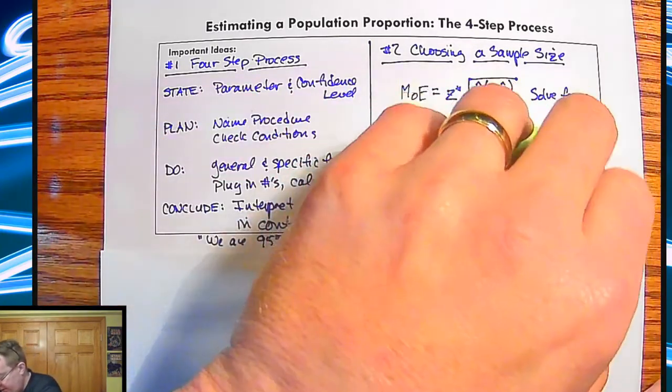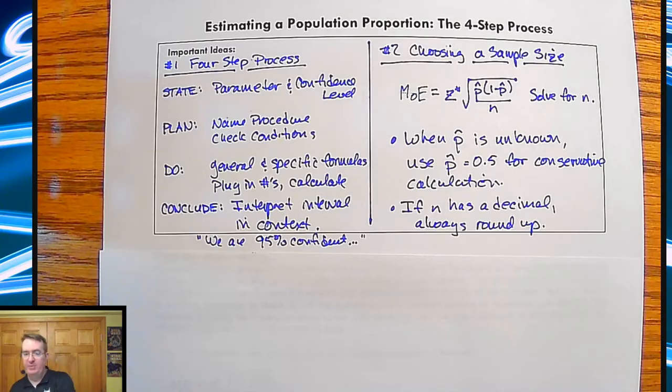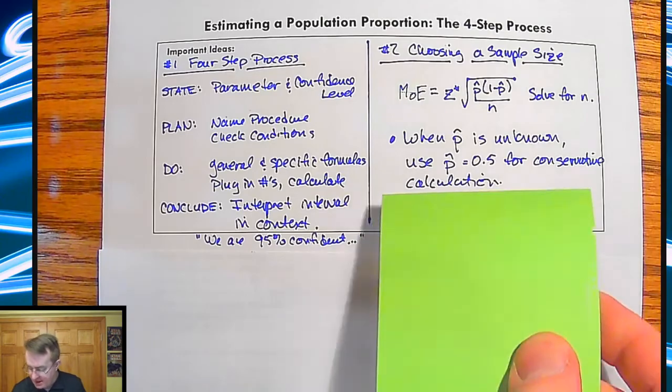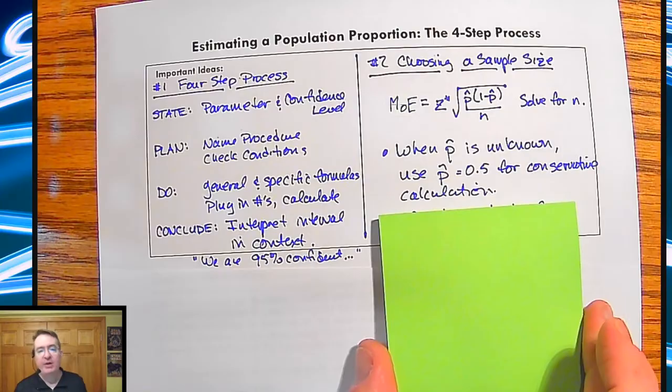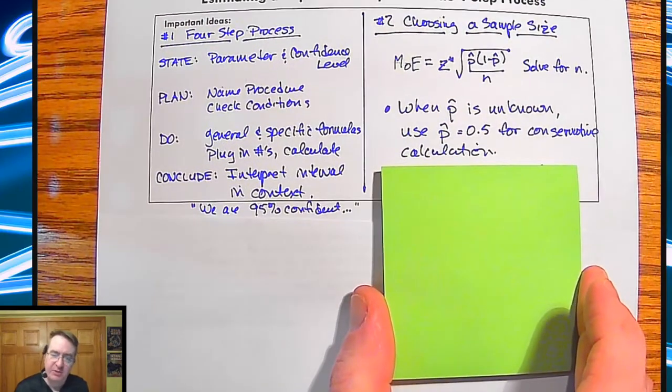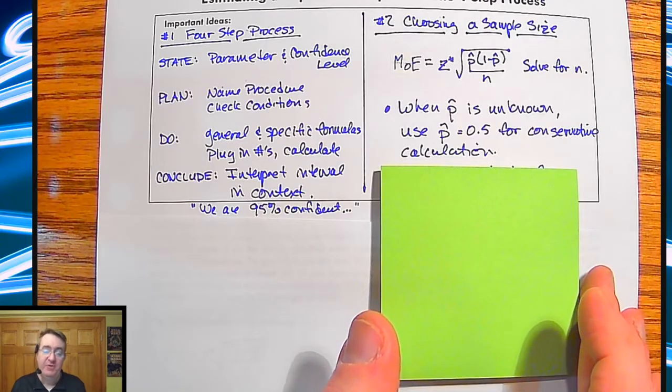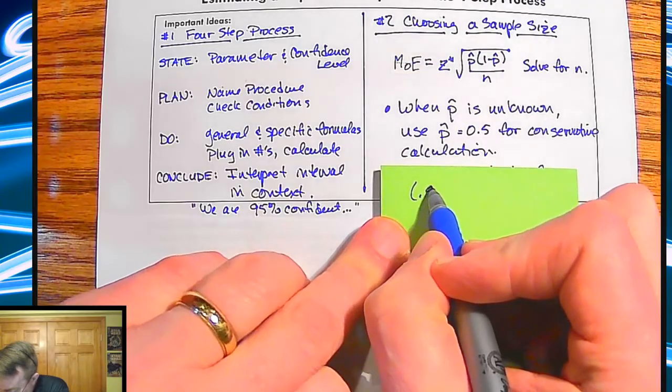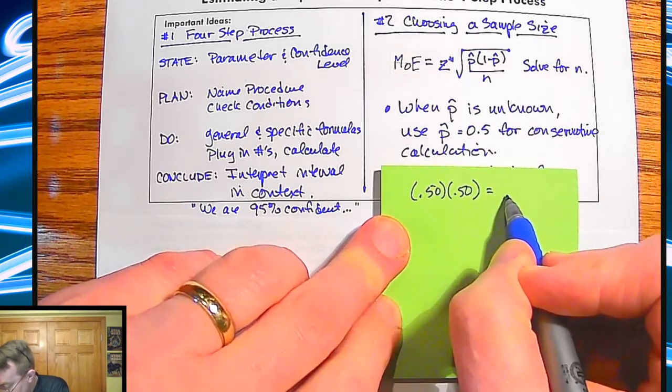A couple of things to point out. If you do not know what P hat is, use 50% for P hat. It's a conservative calculation. Why? Remember back to your geometry class. There was always those problems of like, you have 100 meters of fencing and what's the largest area that you can find? And it invariably, if you were involving all four sides, made it into a square. So watch what happens.